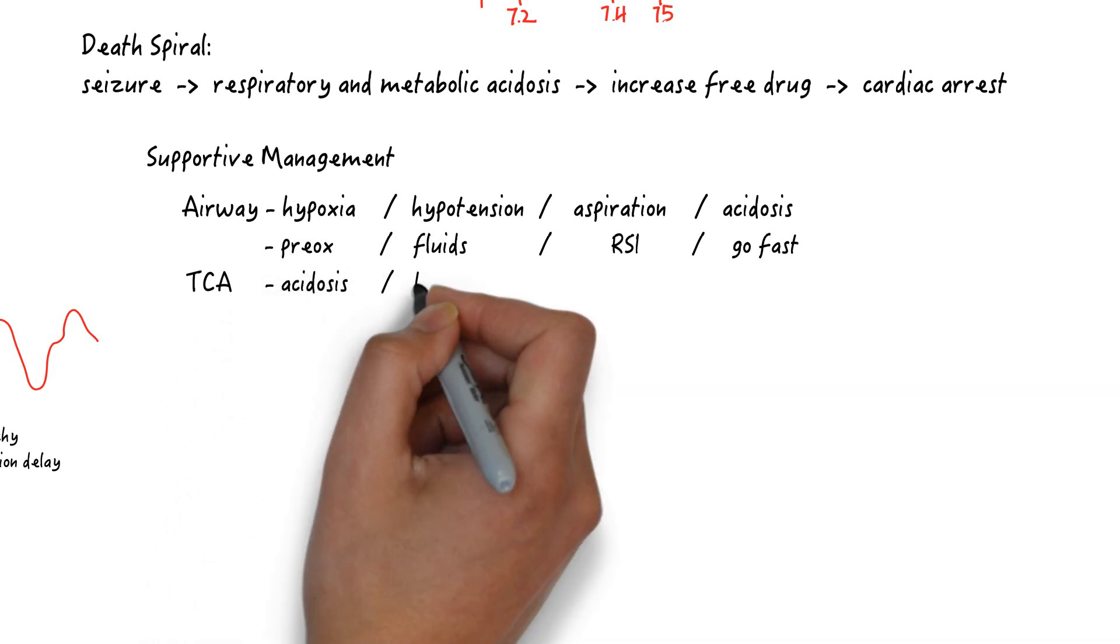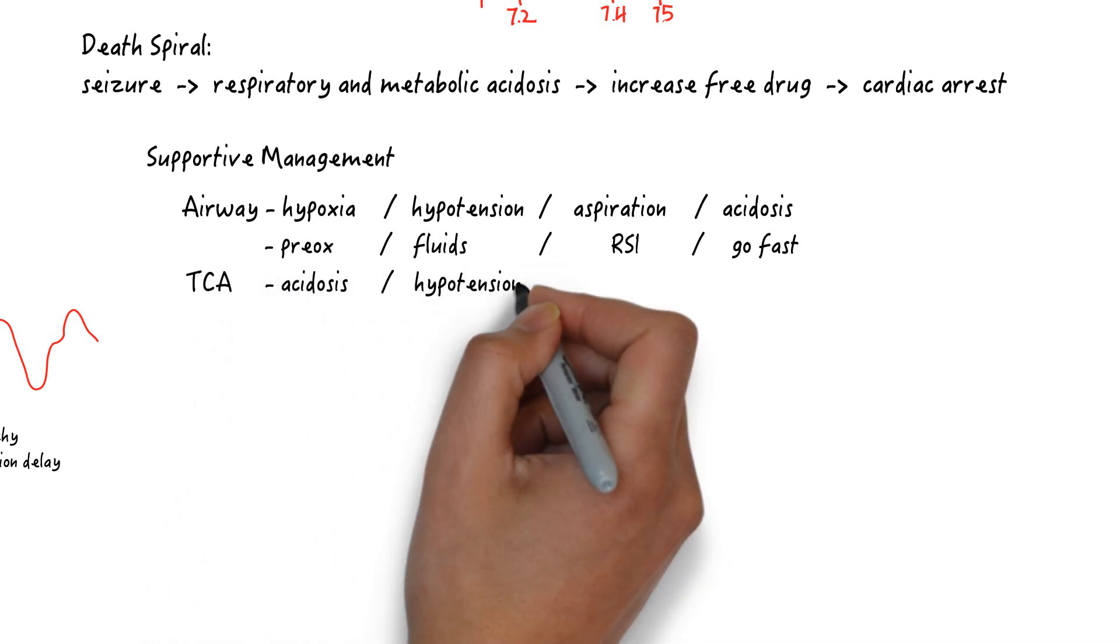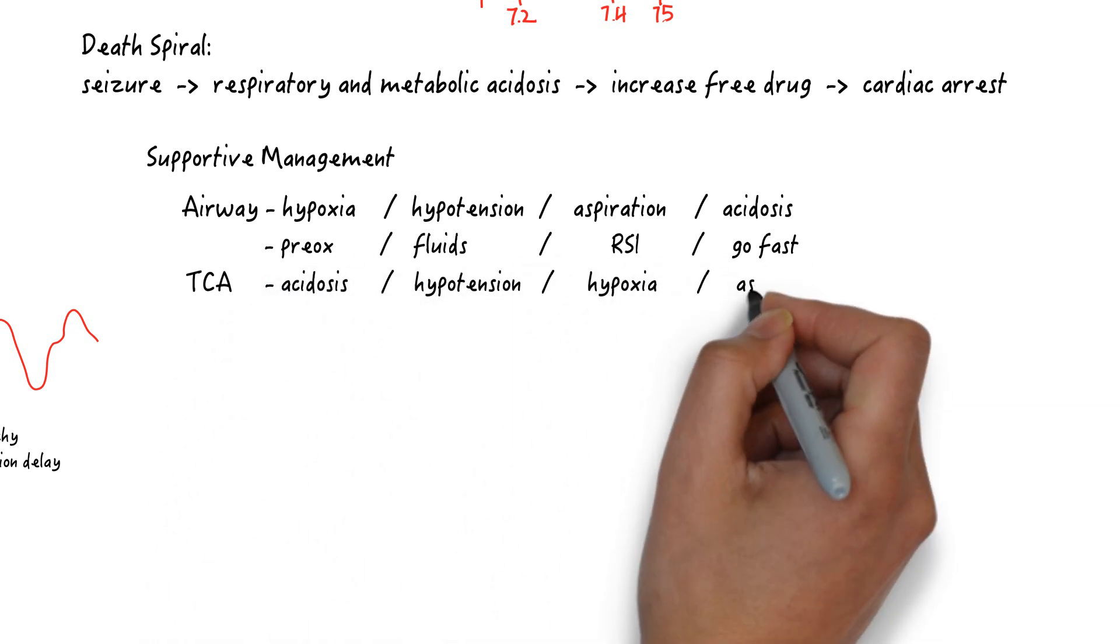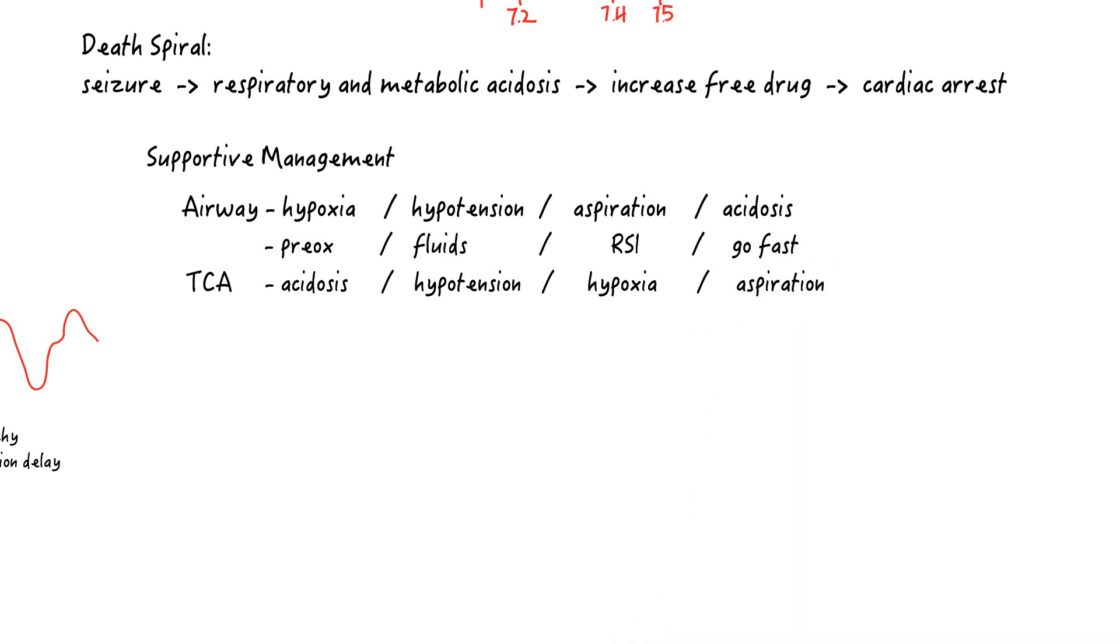The most dangerous part of intubating this patient is acidosis, because of the death spiral we discussed. The second is hypotension, because these patients typically start off hypotensive with the anti-alpha effects. Fluids and pressors are very much indicated here.